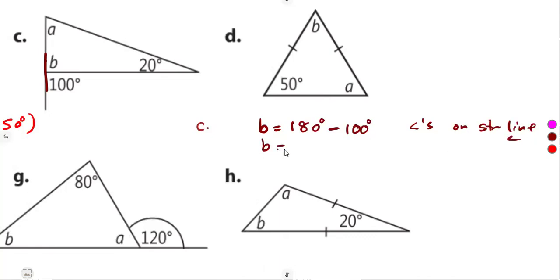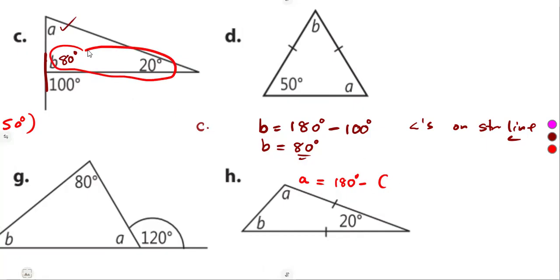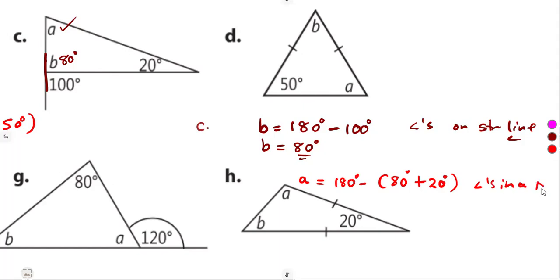So angle B equals 180 minus 100, which is 80 degrees. To find angle A, we work with the angles inside the triangle. Angle A equals 180 degrees minus the sum of the two known interior angles: 80 degrees and 20 degrees. That gives 180 minus 100, which is 80 degrees.